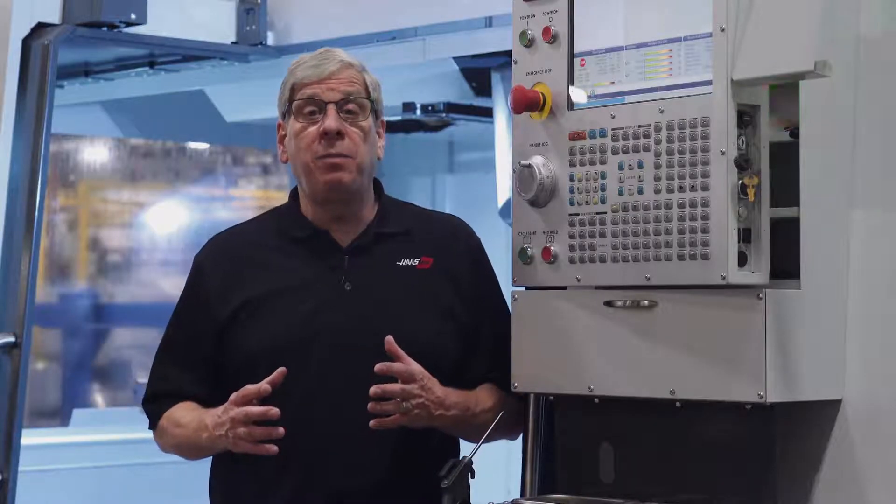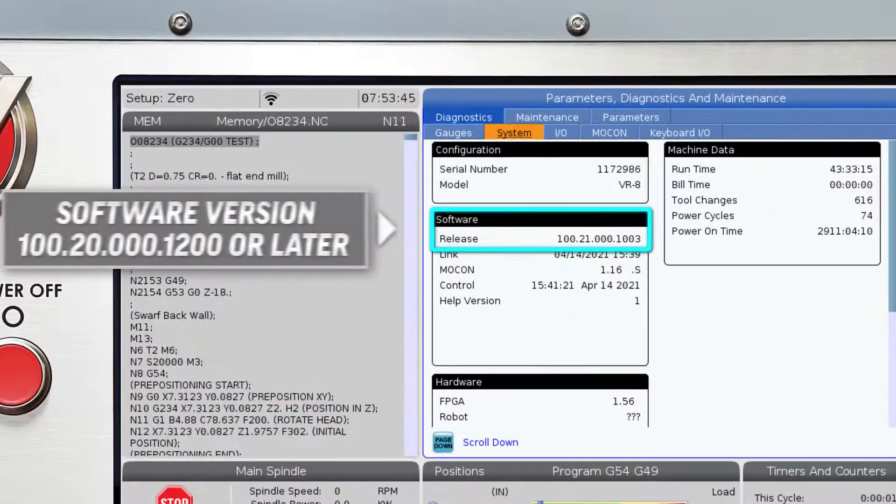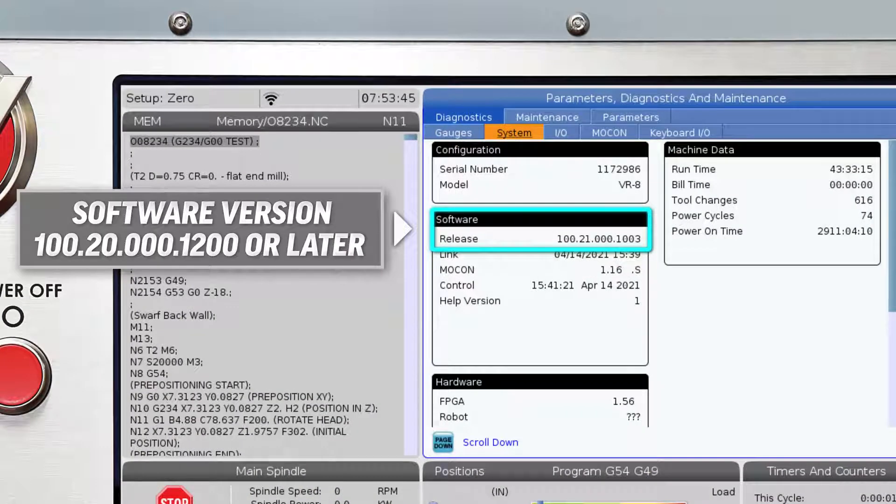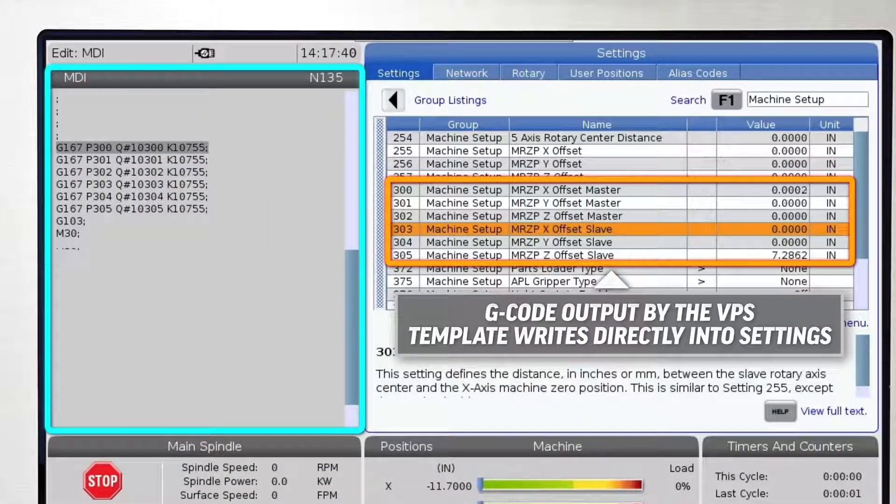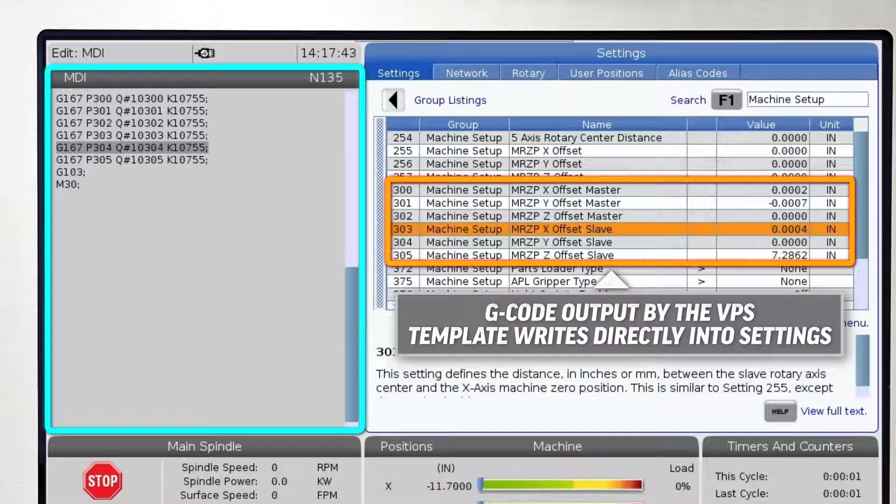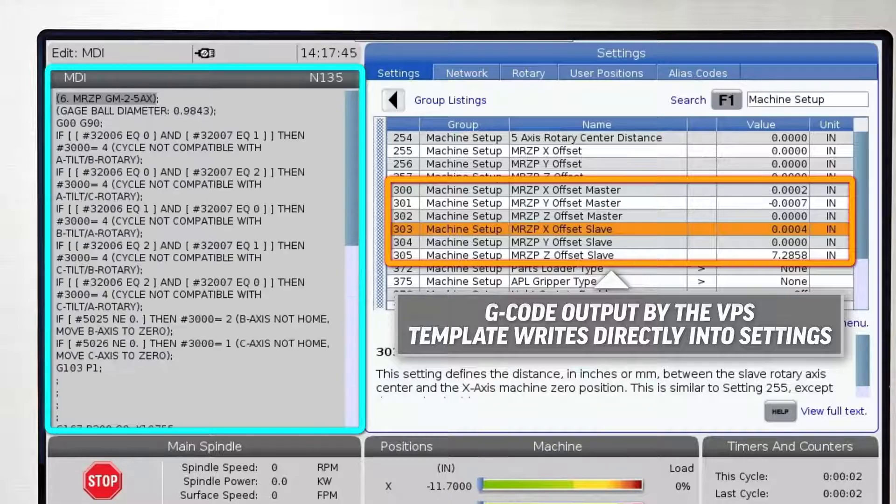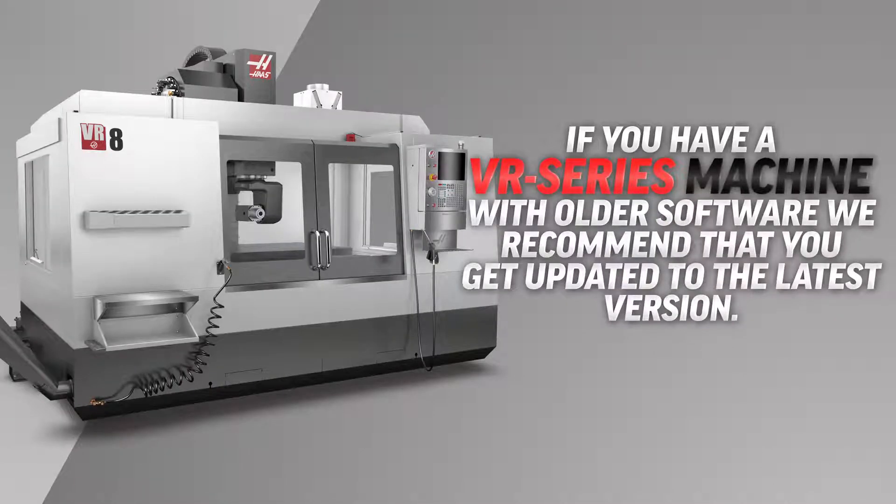The VPS templates and software were updated in versions 100.20.000.1200 to allow writing directly to settings from within the G-code output by the VPS template. If you have a VR series machine with older software, we recommend that you get it updated to the latest version.